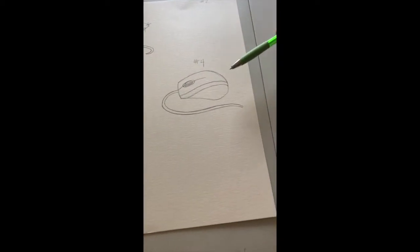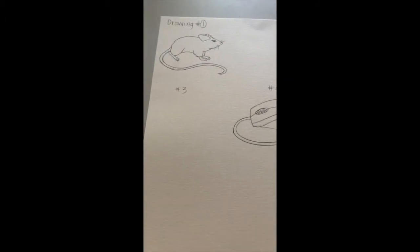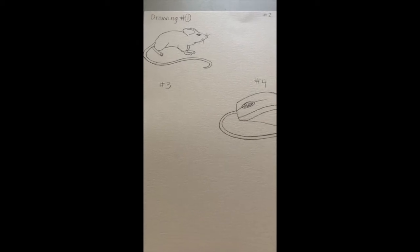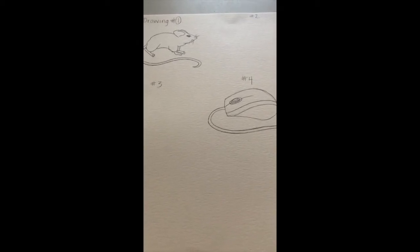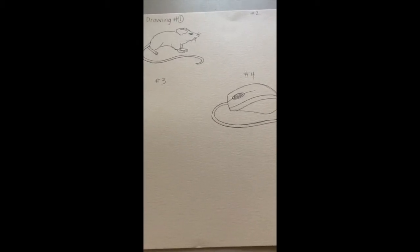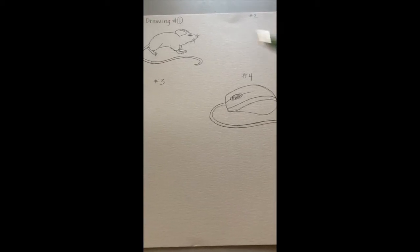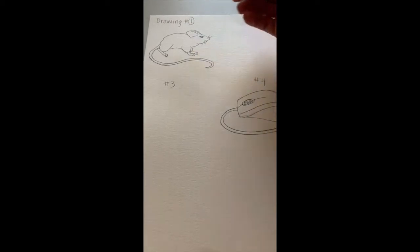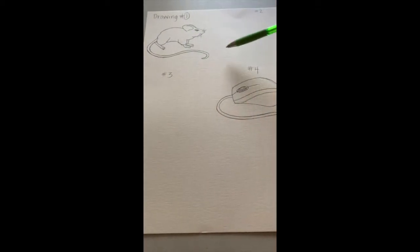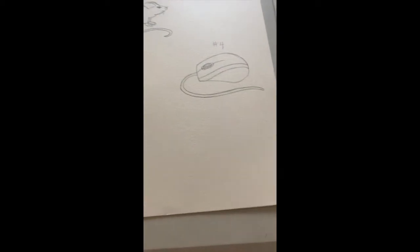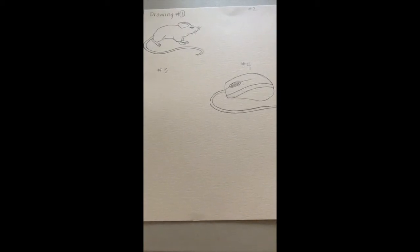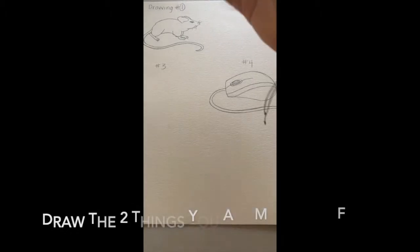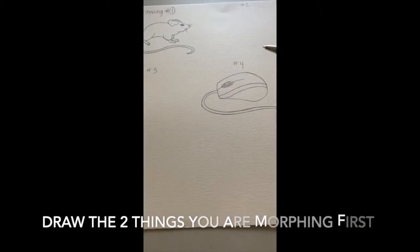Mouse the animal and mouse as a computer mouse. When I was drawing and looking for images online, I was looking for images that look kind of the same, that my mouse was in the same position - computer mouse and the animal mouse - and then I drew the tail and the cord in the same position. You want to make sure there are similarities in your number one drawing and then your last drawing.